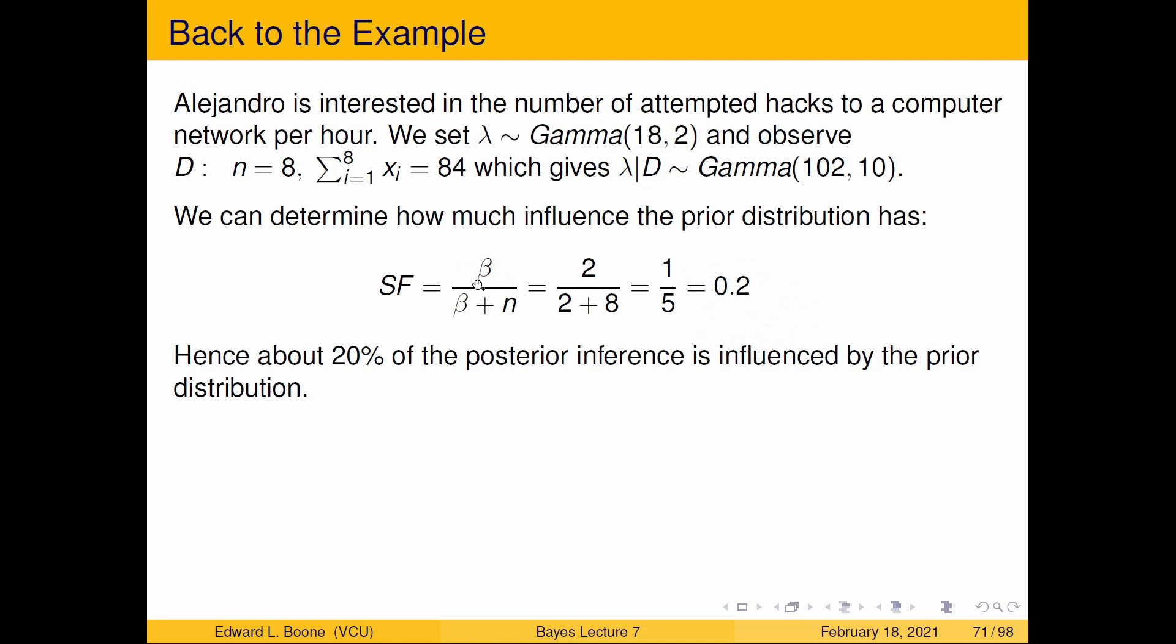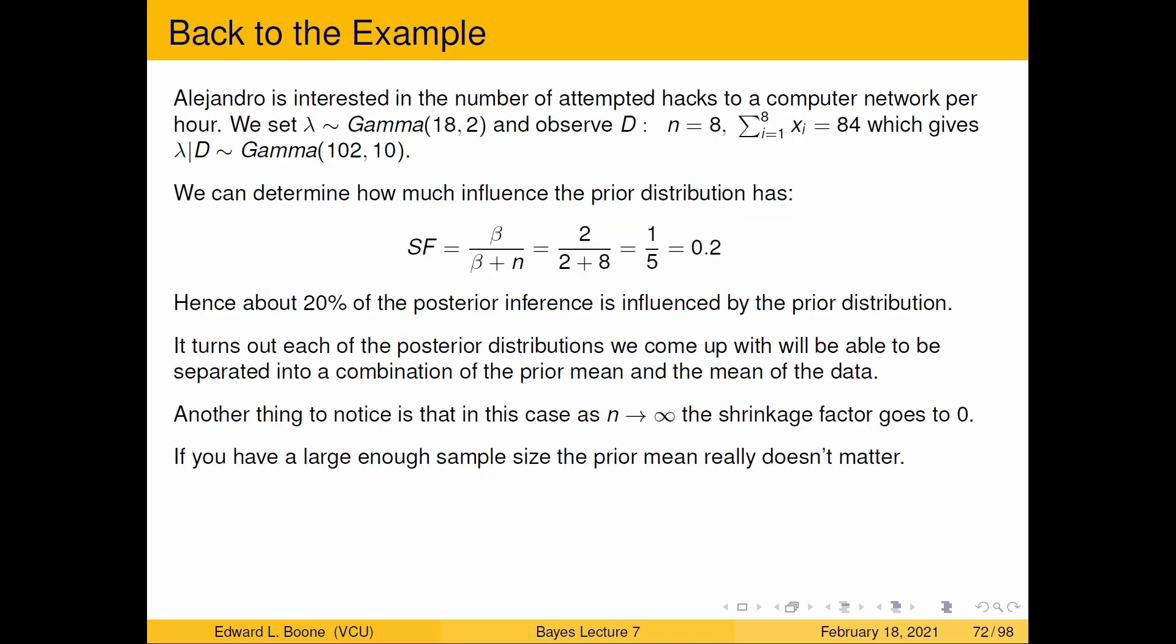And if you stare at this, you can see here n is the amount of information we had from the data. And β is a similar type idea of how much information we're putting in. Notice α doesn't show up here.